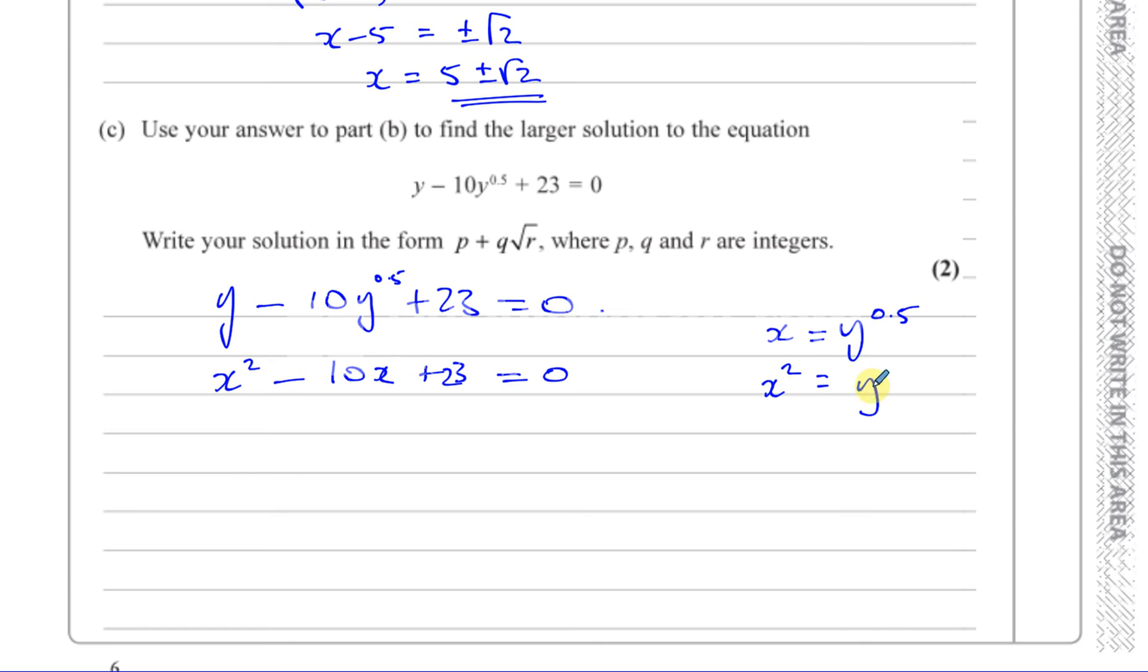So we can rewrite this, or we can solve this equation. We know that y is equal to x squared. And we know that y has two values. x has two values. So you have 5 plus root 2, so y will be (5 + √2) squared. And y will be (5 - √2) squared. So we're going to write an answer like this.